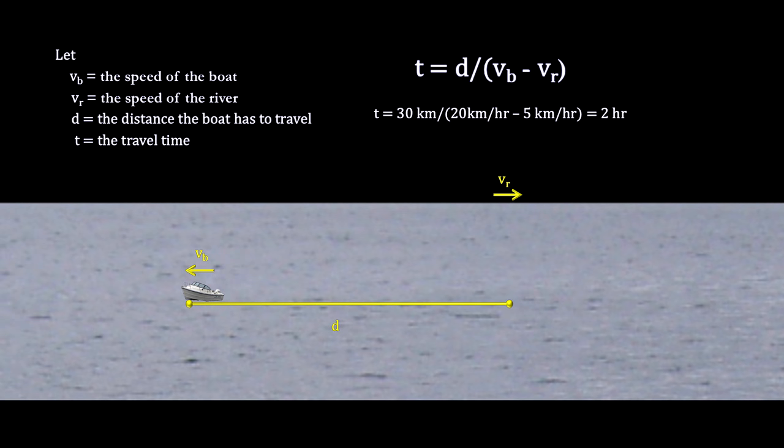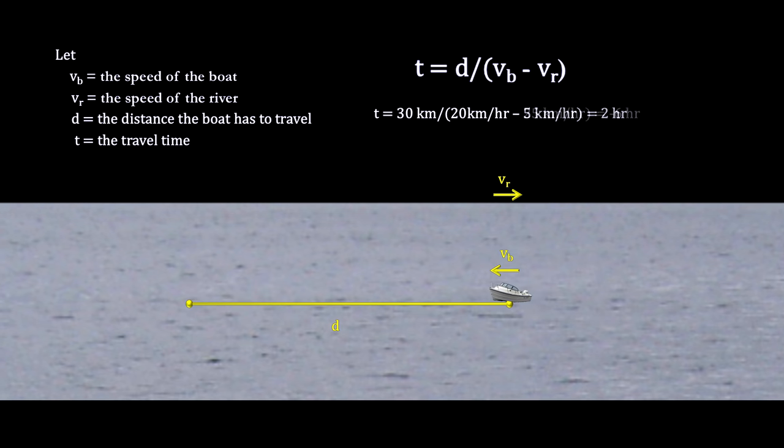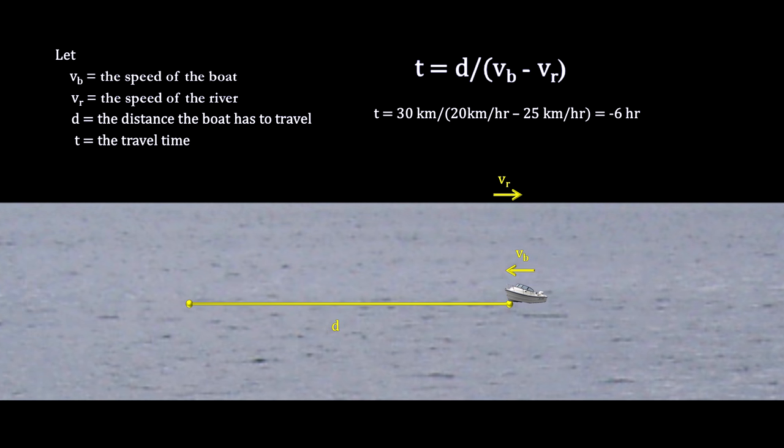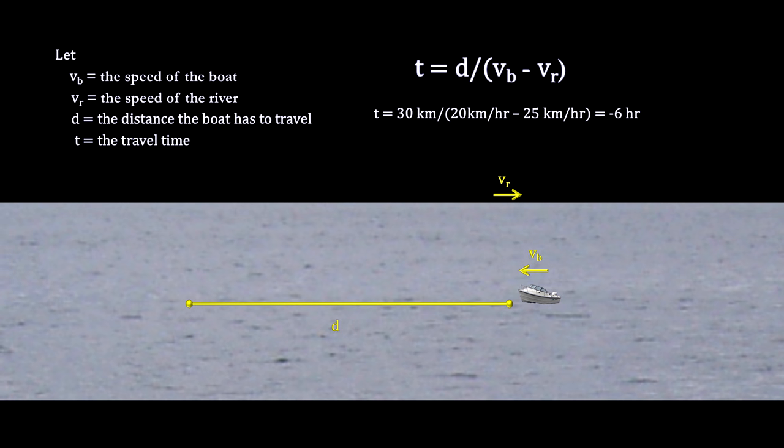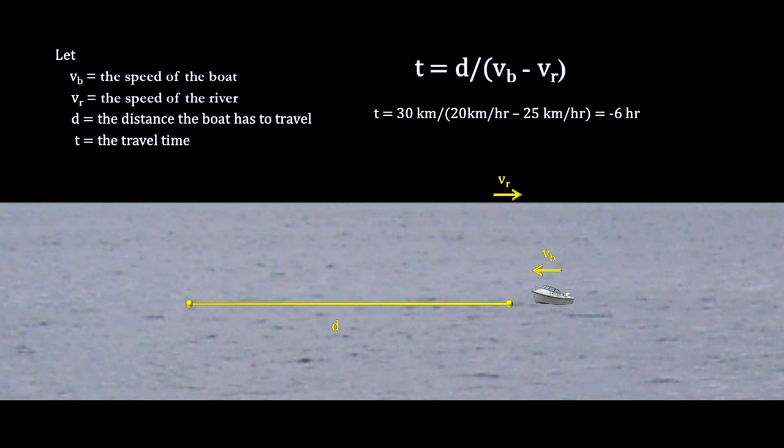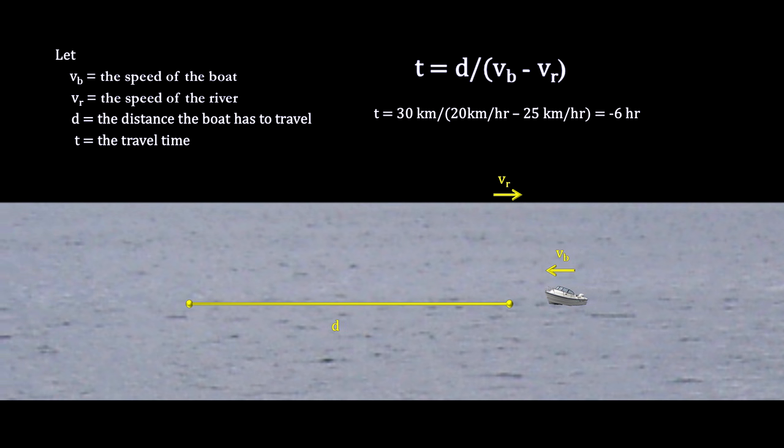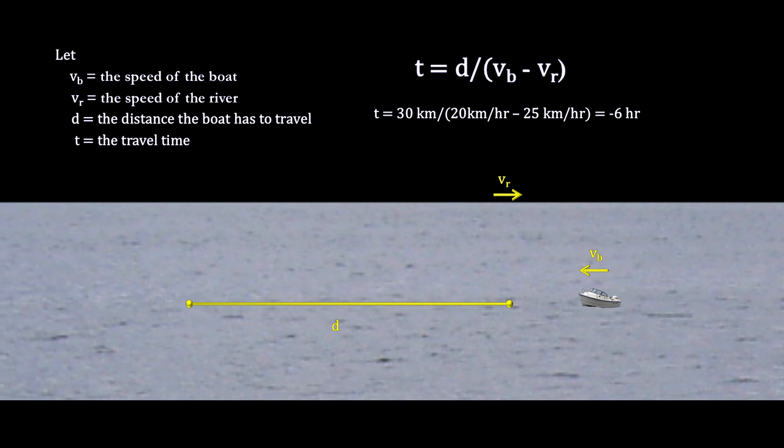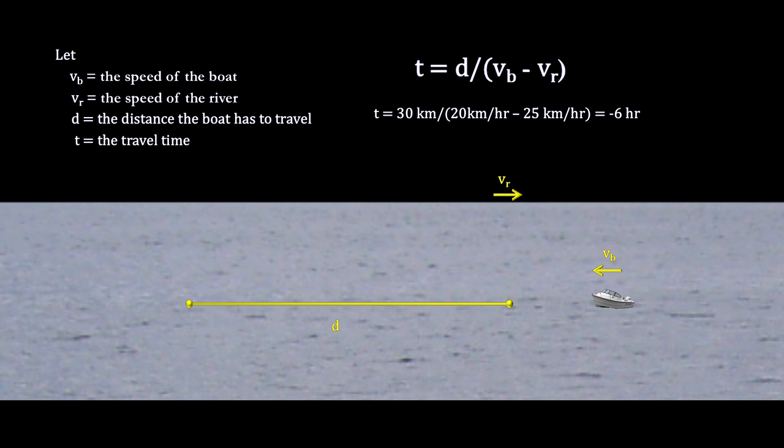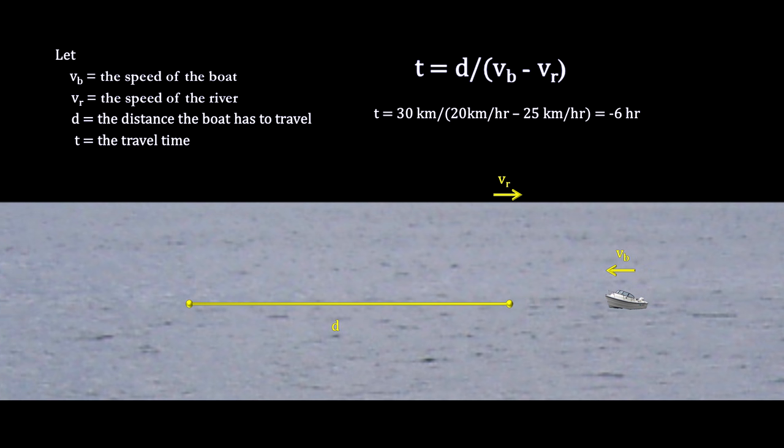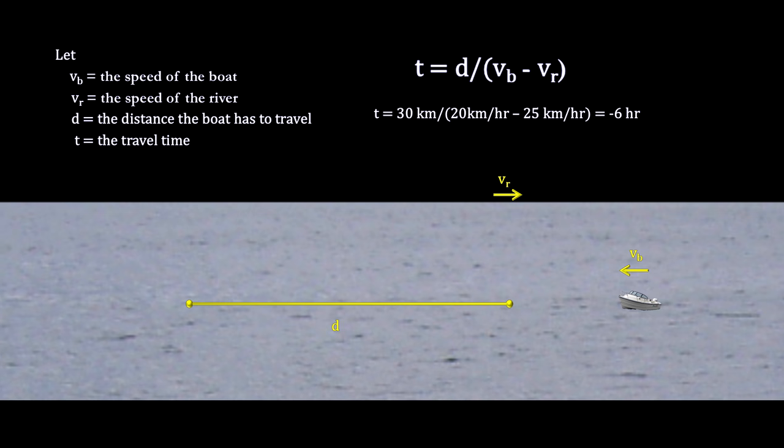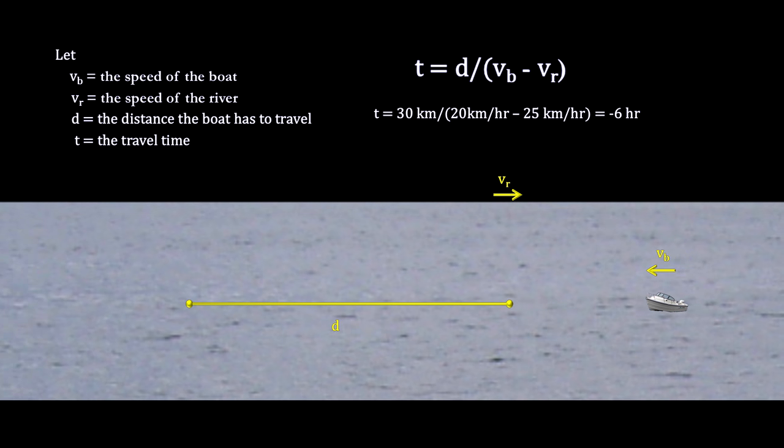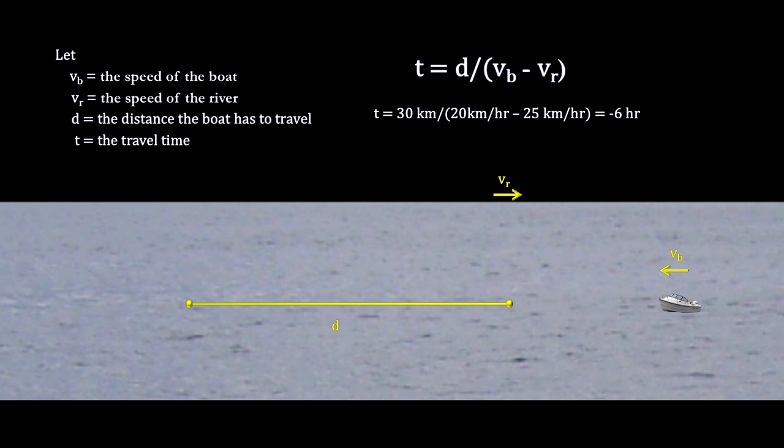The solution is pretty straightforward. The time it takes is just the distance it has to travel, divided by the speed it is traveling. And that speed would be its velocity, minus the velocity of the river. If the distance is 30 kilometers, and the boat is running at 20 kilometers per hour, and the current working against it is 5 kilometers per hour, we see that the trip home will take 2 hours. But what if the current is greater than the speed of the boat, say 25 kilometers per hour? Then, the equation gives us negative time. Is time running backwards? Absurd.